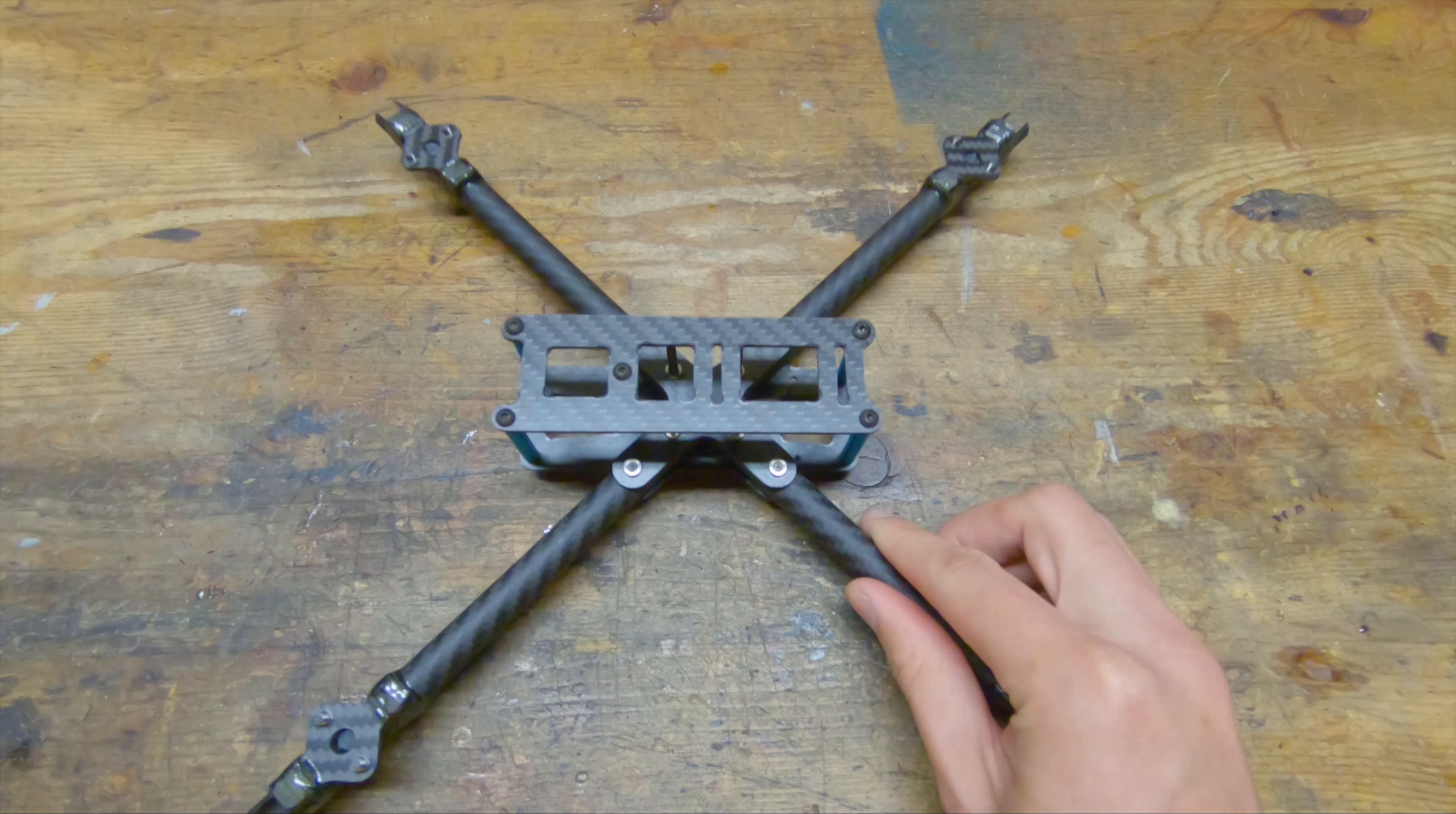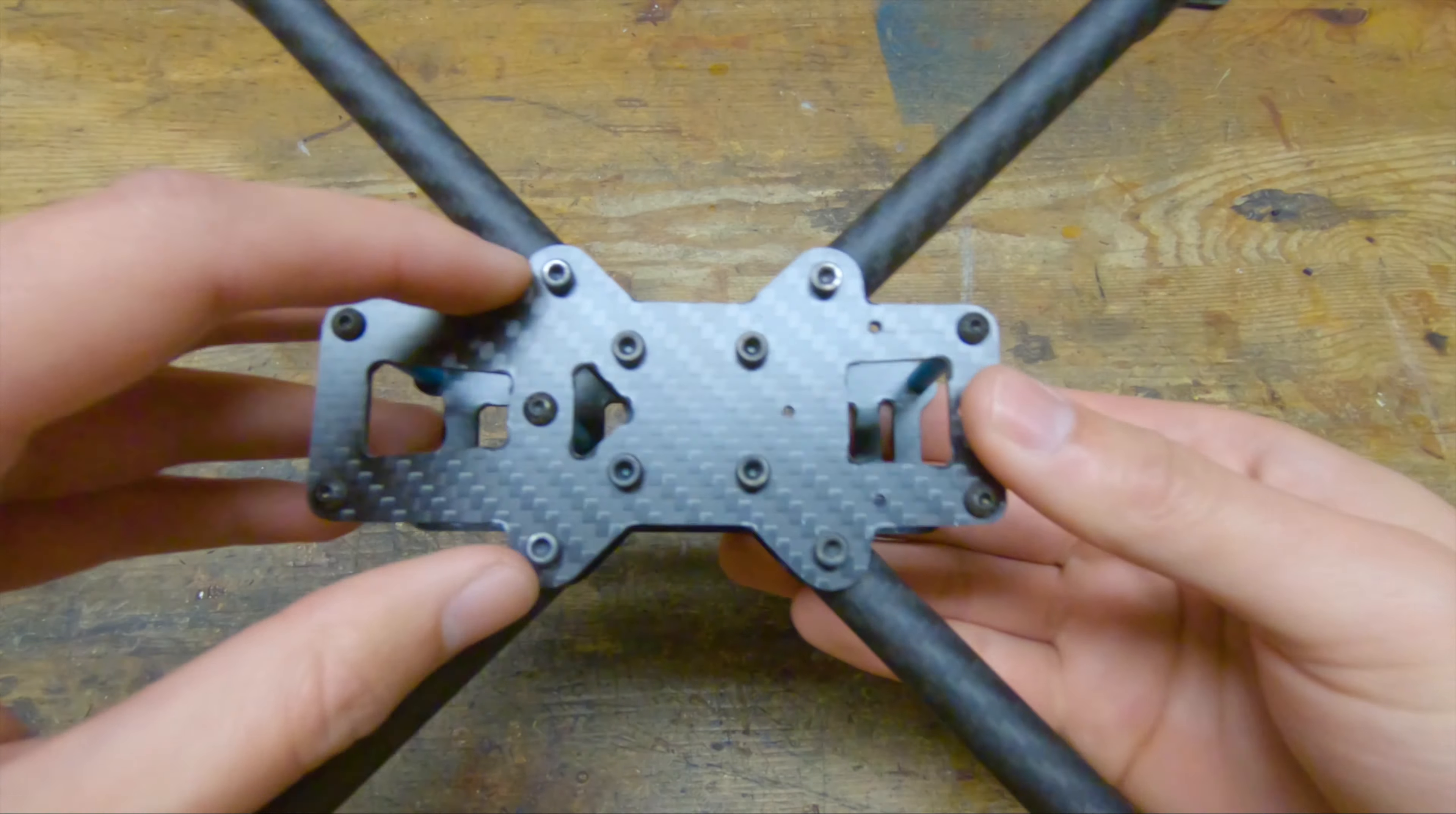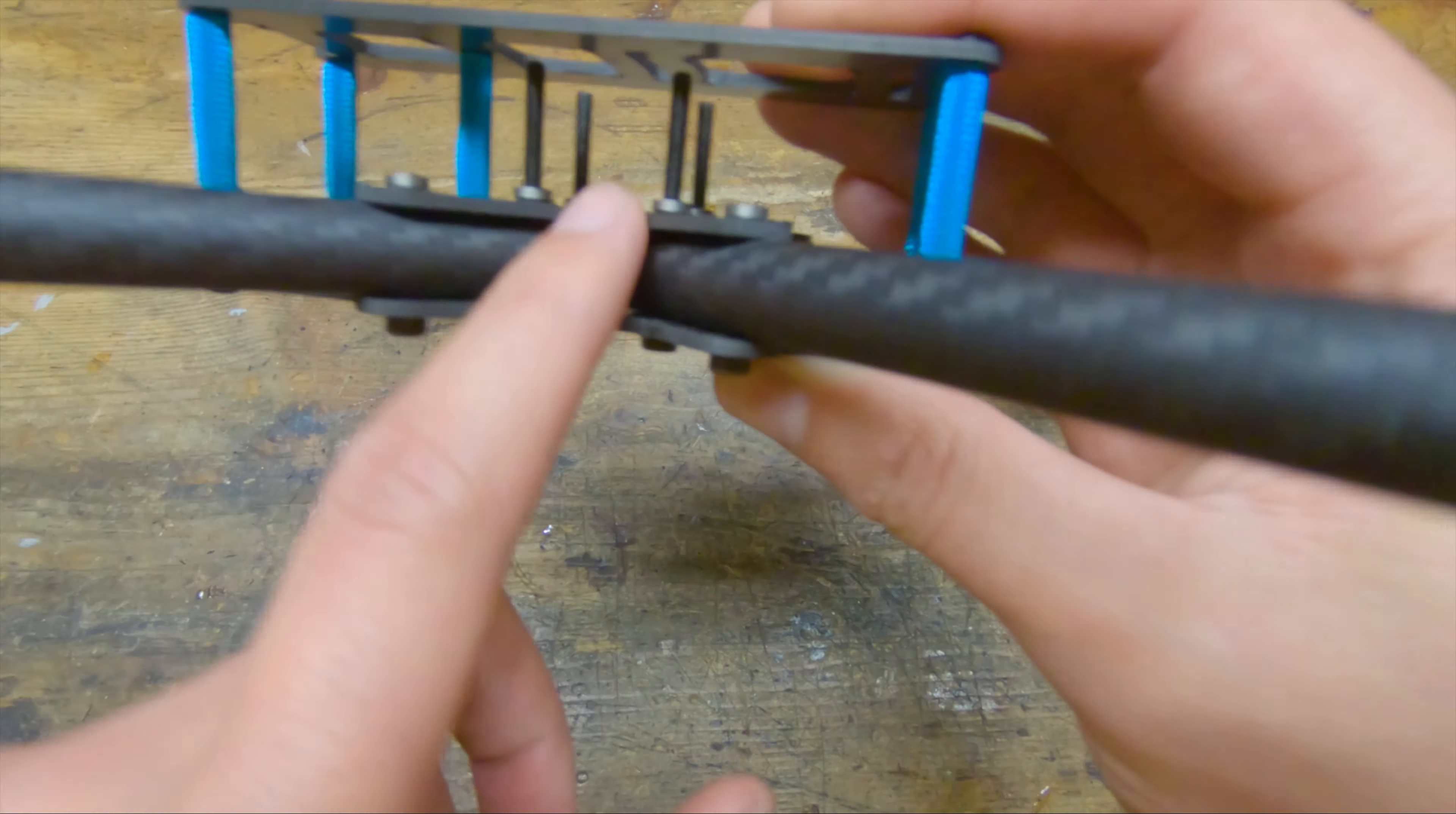The other big change for version 6 is that it now supports digital in the form of the Caddx Vista. You can fit the Caddx Vista in the back of the fuselage here with this diagonal 20 by 20 mounting pattern. Of course you can use this mounting pattern for whatever else you want. It is worth mentioning that the mounting pattern in the back is M2 whereas the mounting pattern in the middle is M3.